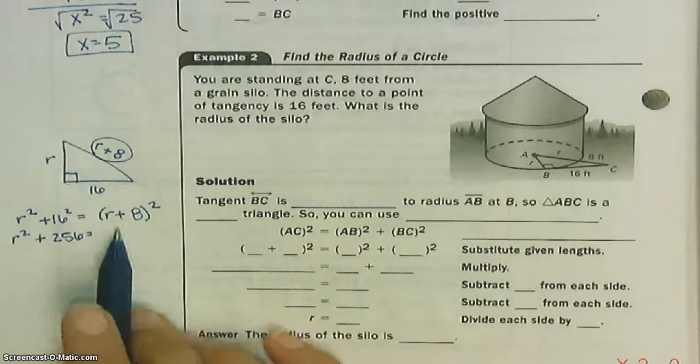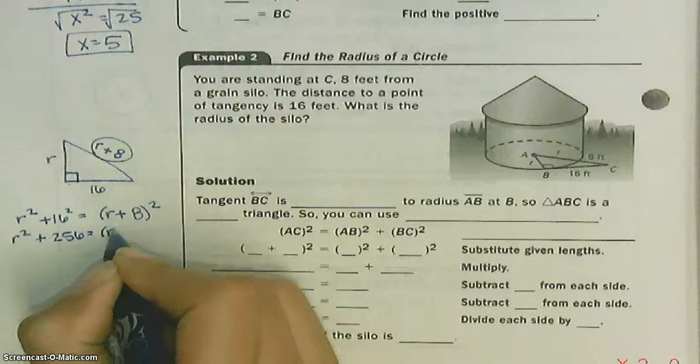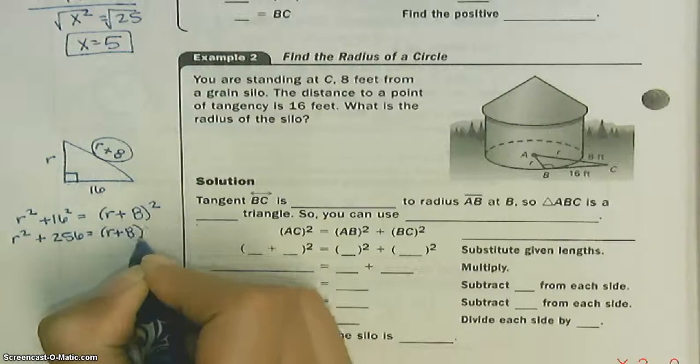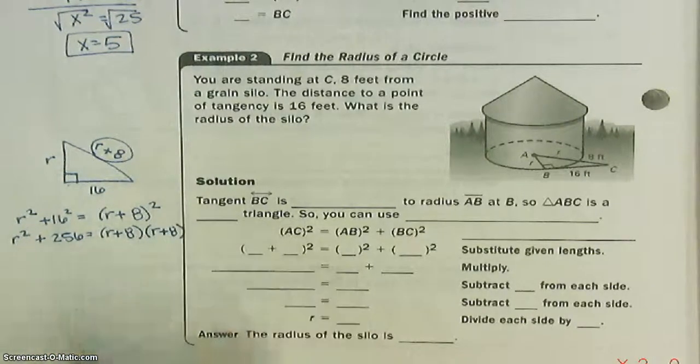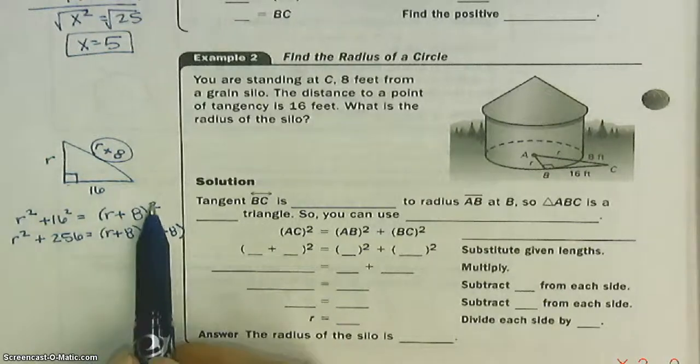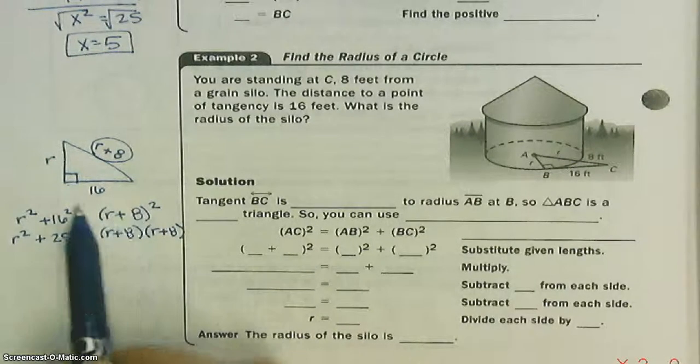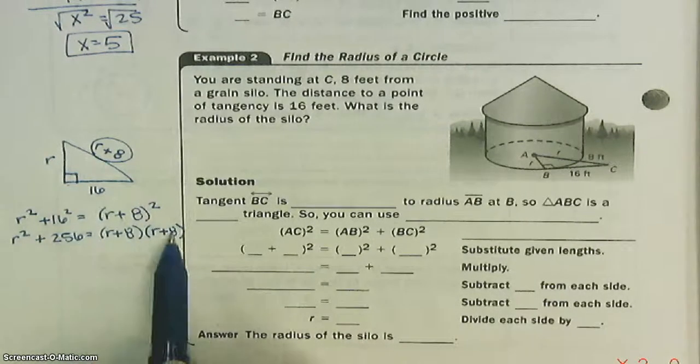Now, this right here, if you remember from algebra, means R plus 8 times R plus 8. We cannot just square this. No, no, no, no, no, no. This is what it means.